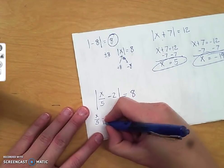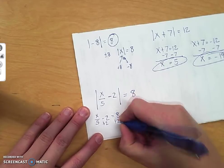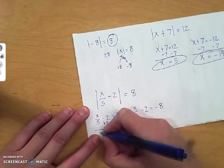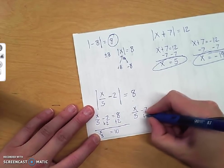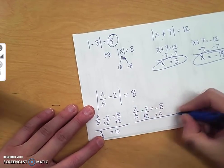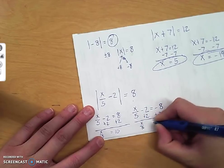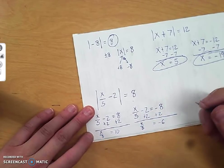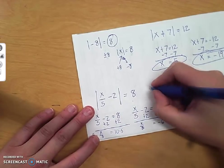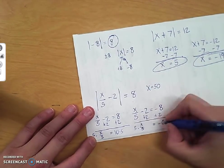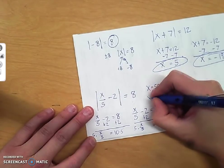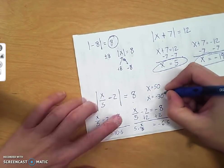I'm going to add 2 to both sides, and I get x over 5 equals 10. Add 2 to both sides here, I get x over 5 equals negative 6. Times by 5, x equals 50. Times by 5, x equals negative 30.